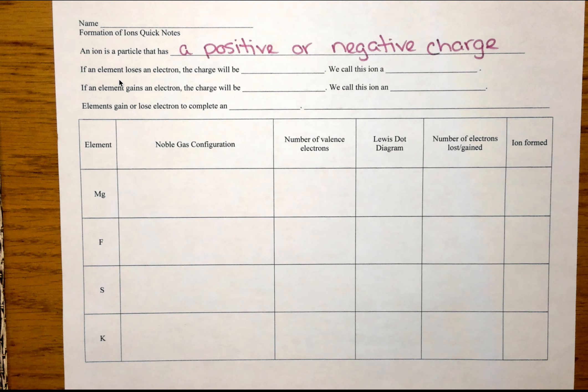Now we know at this point that atoms are neutral because they have equal numbers of protons and electrons. So my proton is my positive and my electron is my negative.